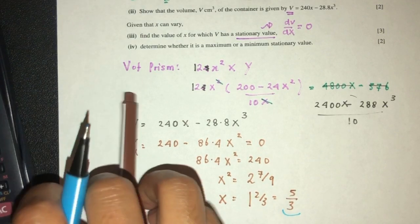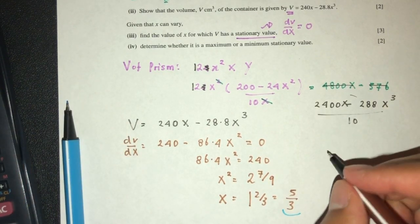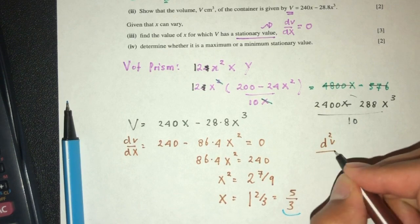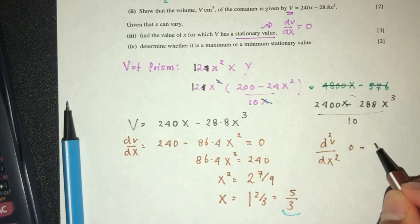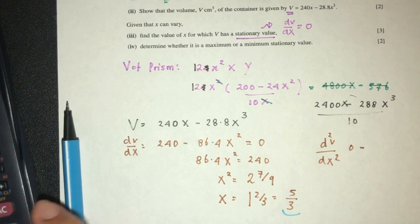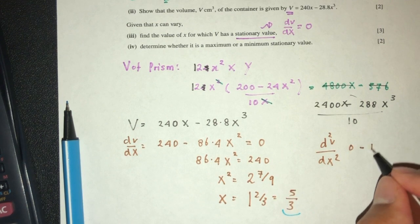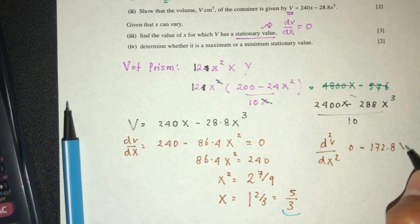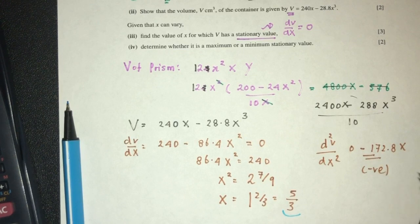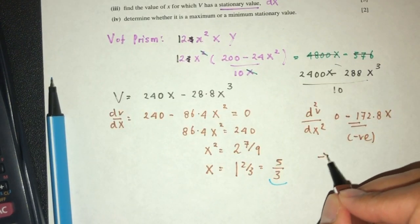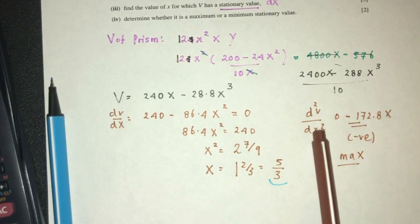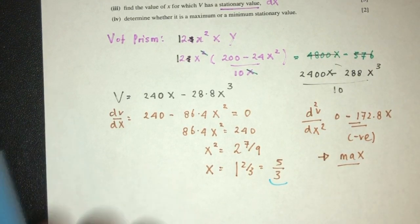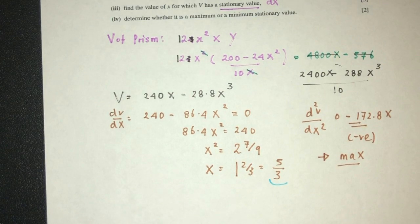Now, last one, we have to find the nature of the value. We have to find d2V by dx2. So redifferentiate that again. This will become 0, become 2 times 86.4, that should be 172.8x. But again, this is a negative value. So you would say since it is negative, we confirm that it will be a maximum value. So that will be a question in relation to differentiation.